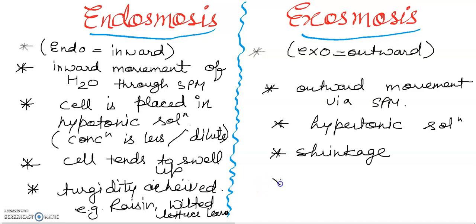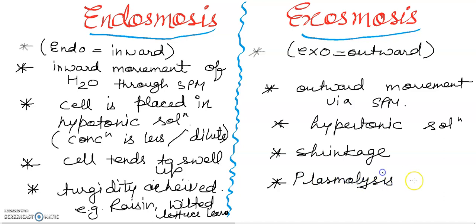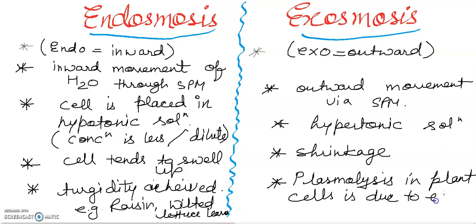Exosmosis में outward movement होगा water molecules का via semi-permeable membrane। Shrinkage होगा, hypertonic conditions होगी। Water molecules बाहर की और जा रहे होंगे। इसी की वजह से shrinkage होगा और plasmolysis in plant cells होगी। Plasmolysis का मतलब है plasma membrane breakdown — lysis means breakdown.